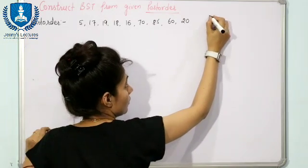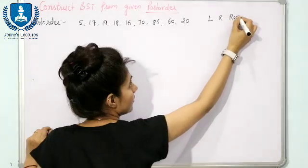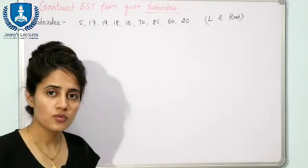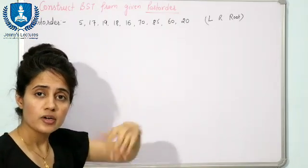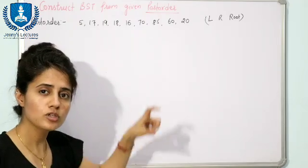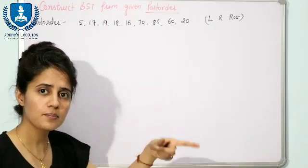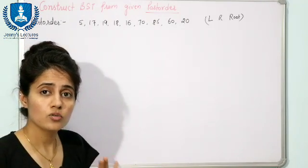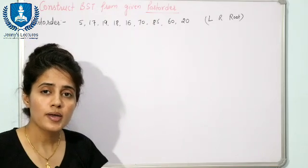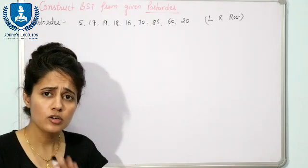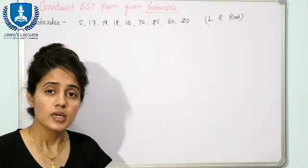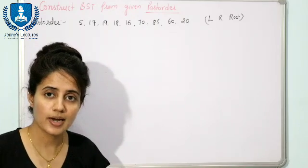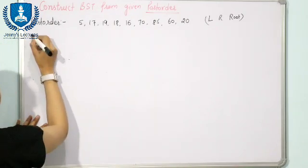In post-order traversal, the order is left, right, root — root is at the last position. In the last video we discussed pre-order traversal, found inorder, and constructed a BST using both. We'll follow the same method here. Post-order traversal is given; we need to find the inorder traversal. The key property of binary search trees is that the inorder traversal is always in ascending order.